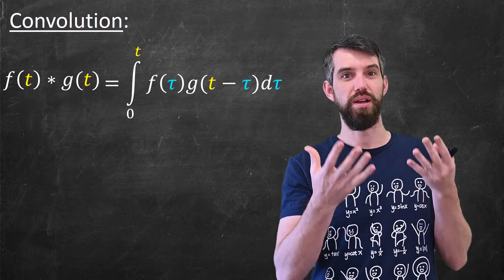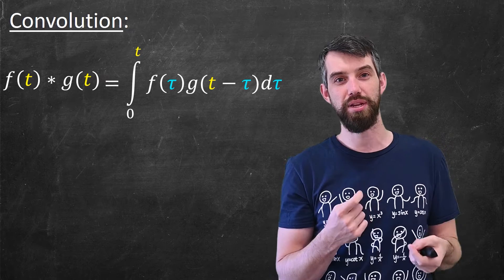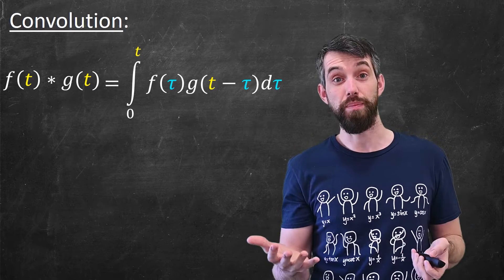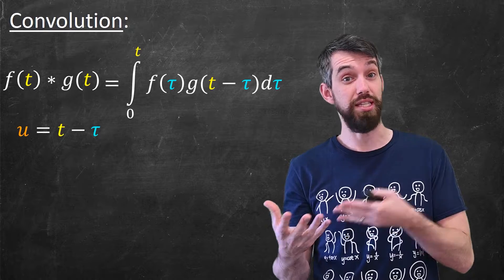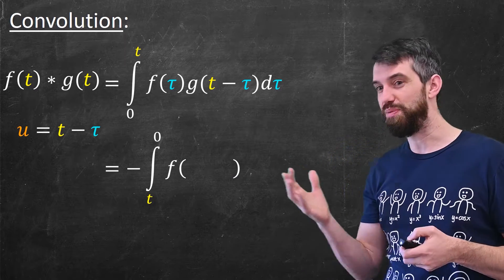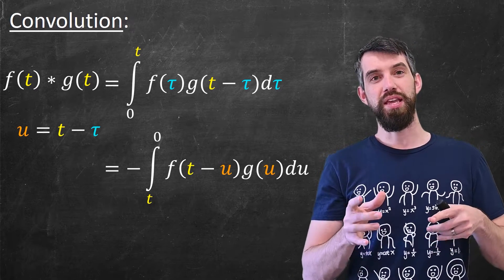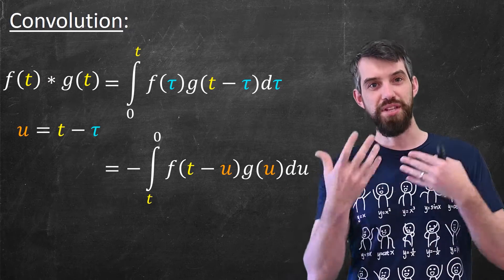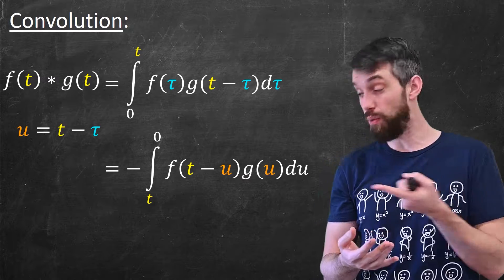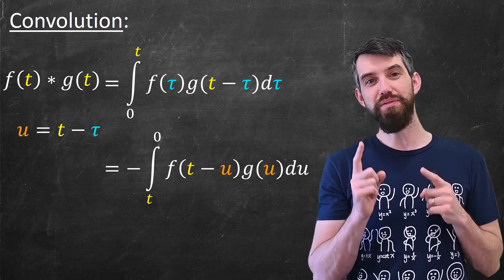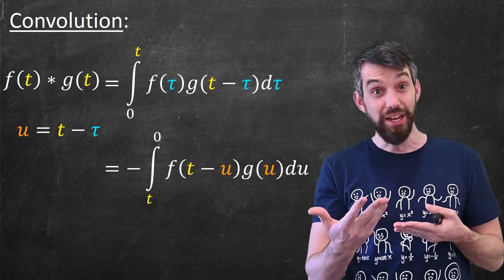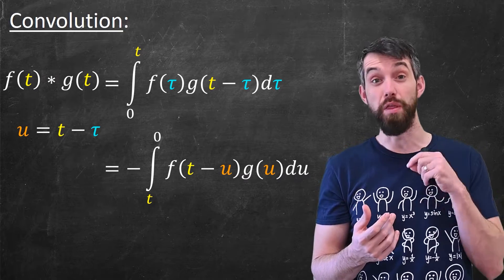I'm going to prove the first of these three properties — the commutativity one. I'll begin with the convolution of f and g and try to rearrange it. Basically, I want to interchange the role of f and g, and I'm going to do that with a substitution. I define a new variable u equal to t minus tau, and plug in this change of variables. The g of t minus tau turns to g of u, the f of tau turns into f of t minus u, the d-tau turns into a negative du — that's why there's a negative sign out front. And the limits of integration change: plugging in tau equal to zero gives u equal to t, and plugging in tau equal to t gives u equal to zero.